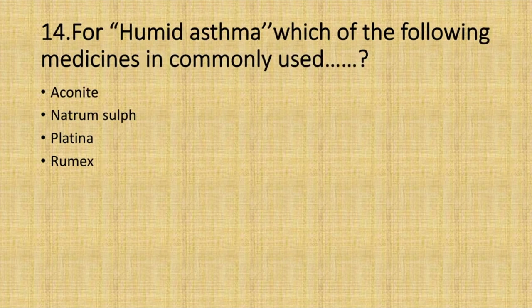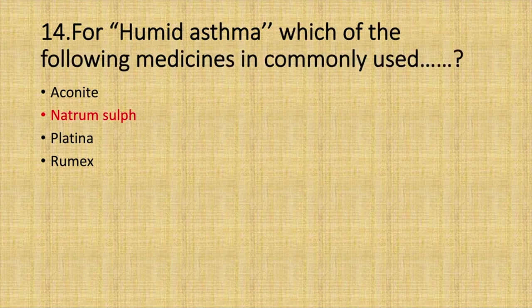For humid asthma, which of the following medicines is commonly used? Option A. Aconite. Option B. Natrum sulph. Option C. Platina. Option D. Rumex. Answer: Option B. Natrum sulph.